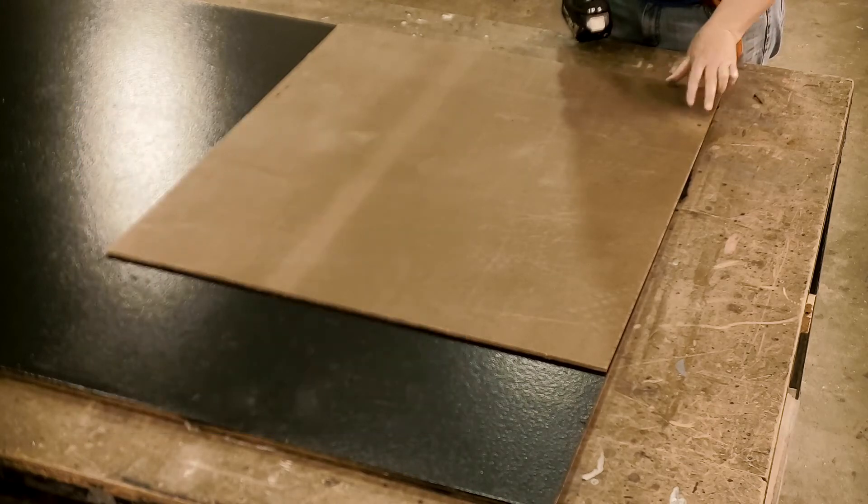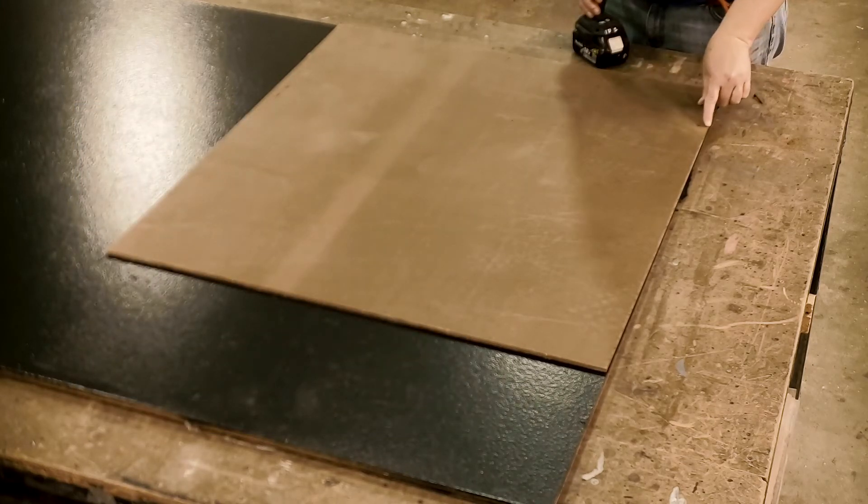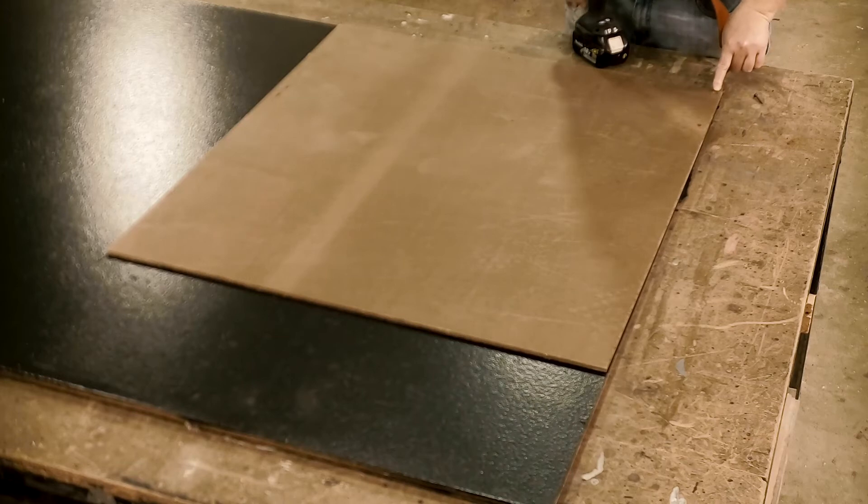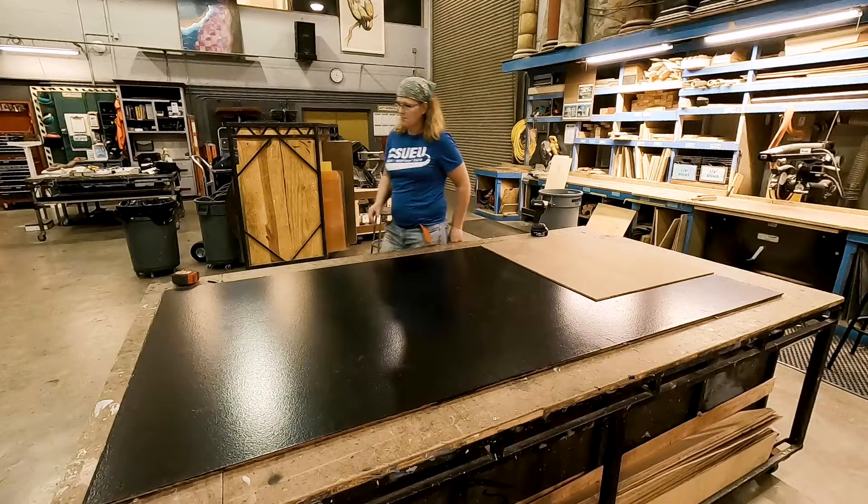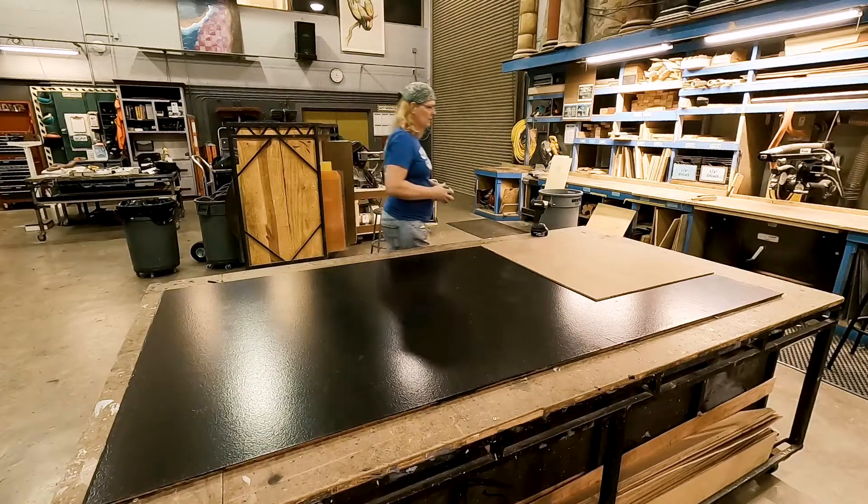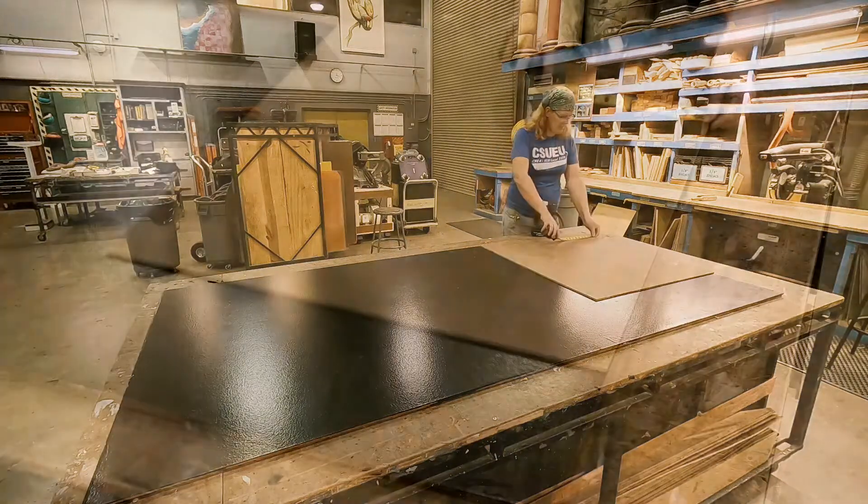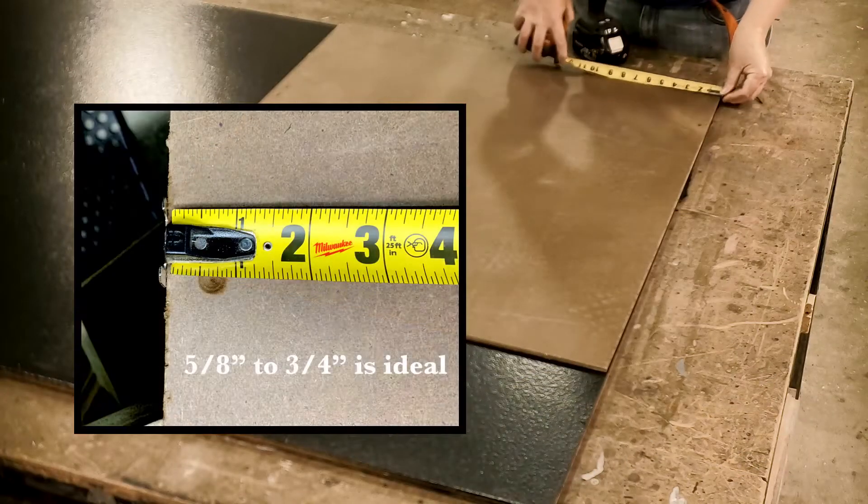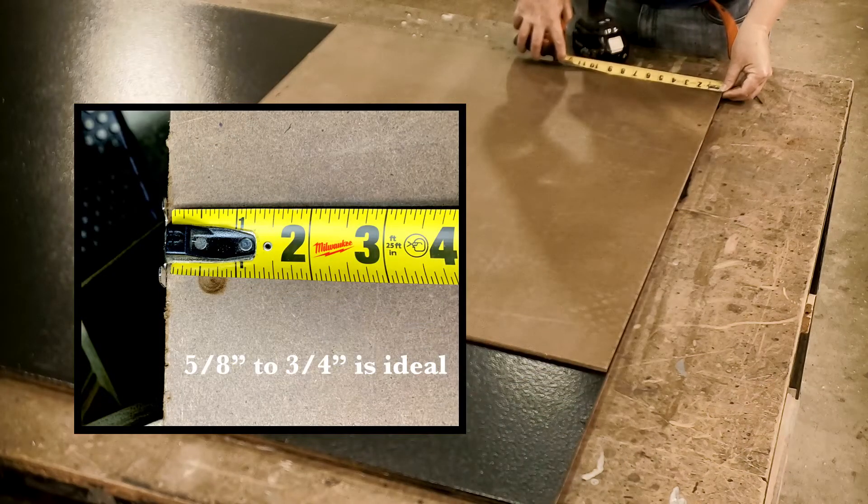These two are good in terms of their distance from the edge. This one's a little bit too close to the edge. We're looking at that - it's about three quarter and this is about half an inch or three eighths.